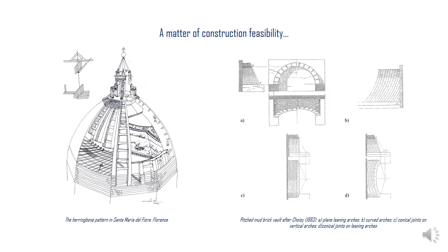In the technical literature, great attention is also given to the description of wooden centerings, which had to be carefully designed in order to be able to withstand the weight of the vault until completion and act as a geometrical guide. In some cases, the construction of wood formwork was difficult, if not impossible. The retrieval of wood was an additional issue for large vaults and domes, especially in some geographical areas where wood was scarce.